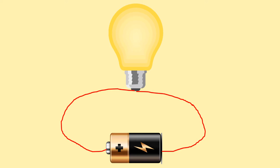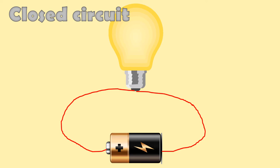Let's have here another example of a closed circuit. As you can see, we have the bulb, battery, and wires. There is no switch in this circuit, but the parts are properly connected. They also form a closed circuit, and the bulb lights up.